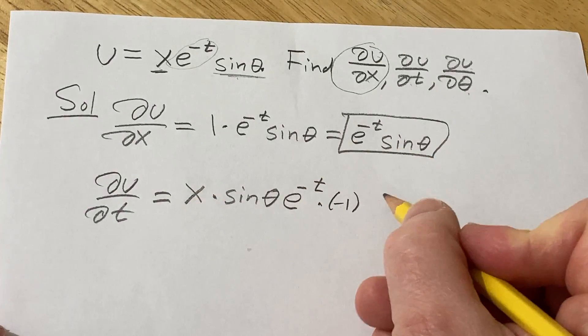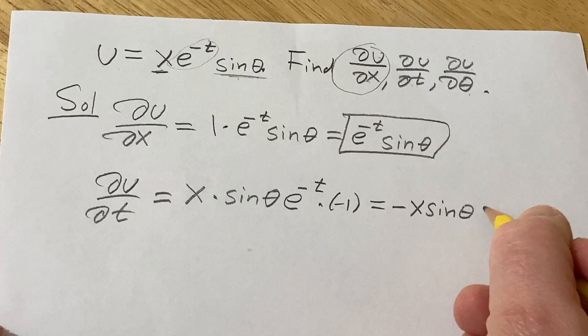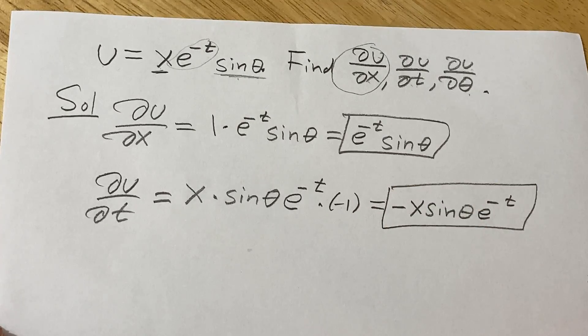So the last thing to do maybe is put the negative in the front. So this is -x sin(θ)e^(-t). So that would be the partial with respect to t.